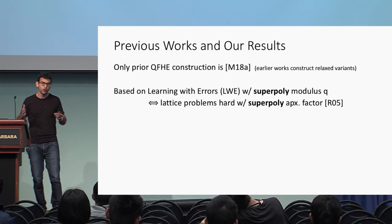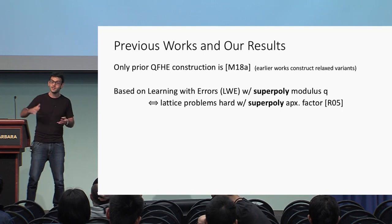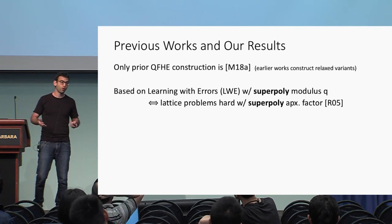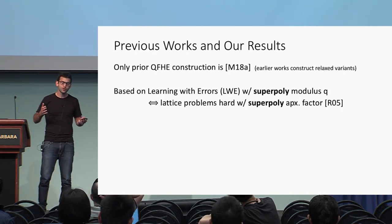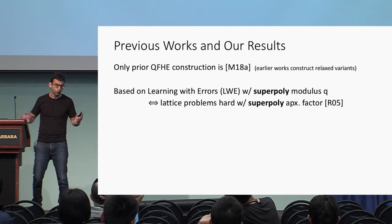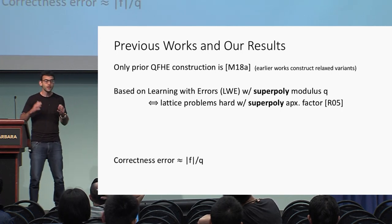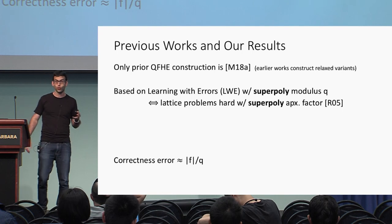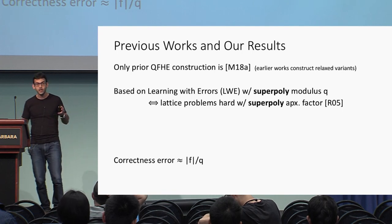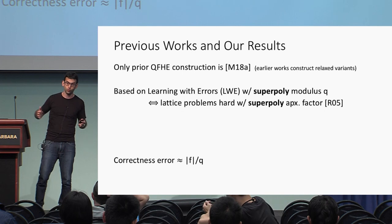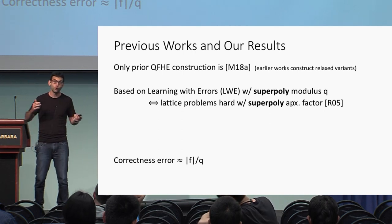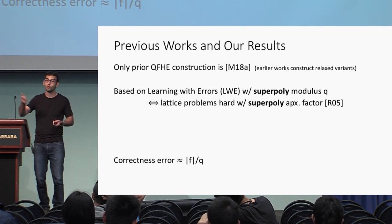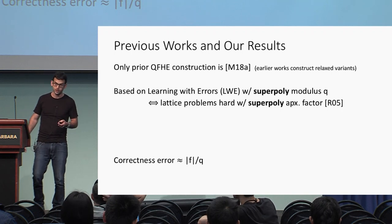The modulus is a parameter of the learning with errors problem, and the smaller the modulus gets, the harder the problem becomes — so the assumption becomes weaker. Originally Regev proposed the hardness of LWE with polynomial modulus, but super-polynomial should also be hard, so this is an assumption we're okay to rely on. The reason super-polynomial modulus was needed is that the quantum homomorphic evaluation had correctness error that scaled roughly with the size of the quantum function divided by the modulus. So for a scheme that works for every polynomial-size function, you need a super-polynomial modulus to keep the correctness error small.